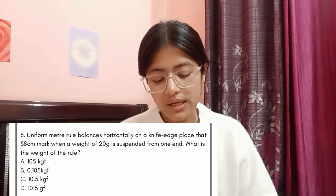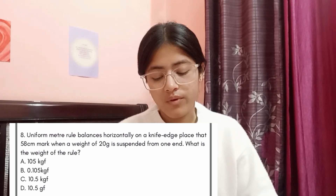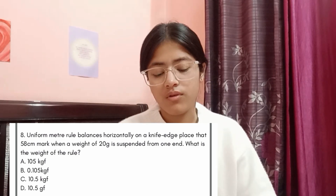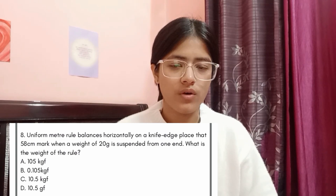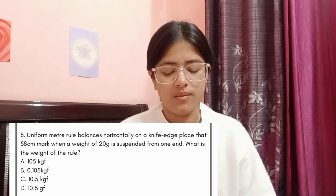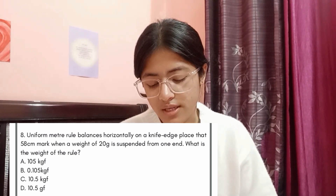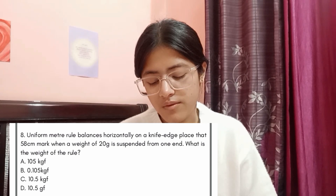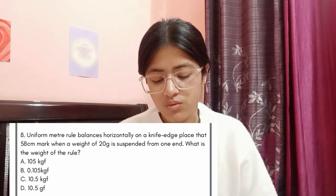Question 8: a uniform meter rule balances horizontally on a knife edge placed at the 58 cm mark when a weight of 20 grams is suspended from one end. What is the weight of the rule? This question comes very often in pre-board exams. Options: A: 105 kgf, B: 0.0105 kgf, C: 10.5 kgf, D: 10.5 gf. The answer is Option B, 0.105 kgf.